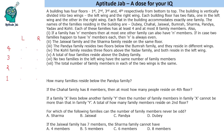We are given the names of the families and conditions about the number of members. Each of these families has at least four and at most eight family members. Apart from that, we are given a condition: if a family has N members, then at most one other family can also have N members. So there can be a maximum of two families with four members.